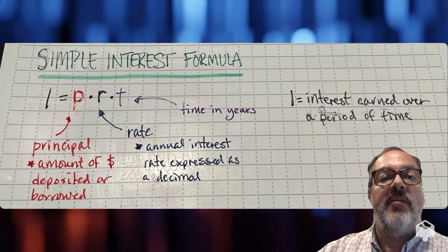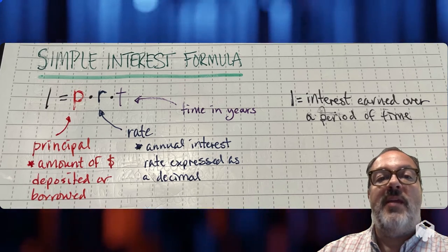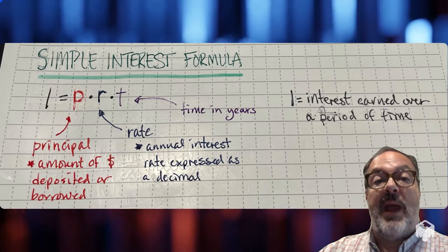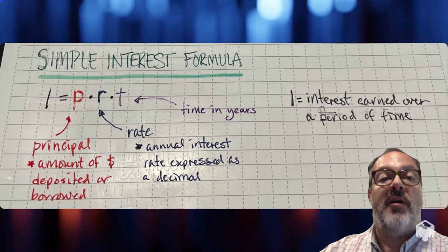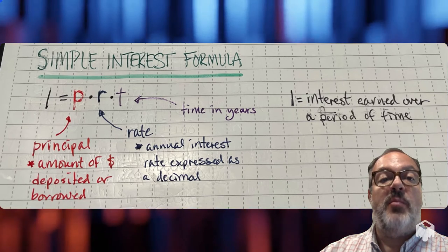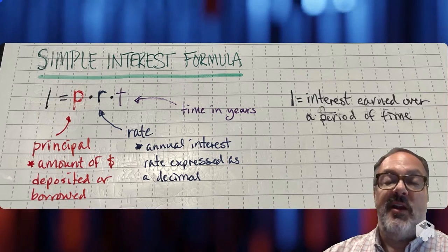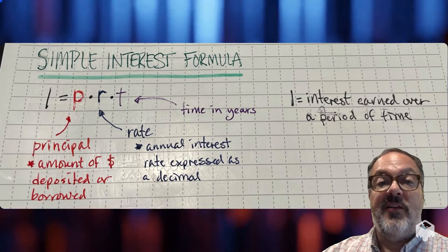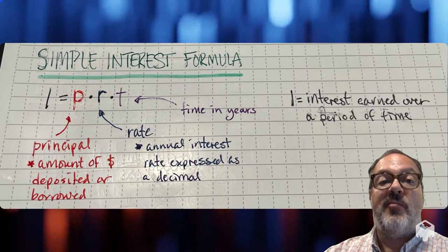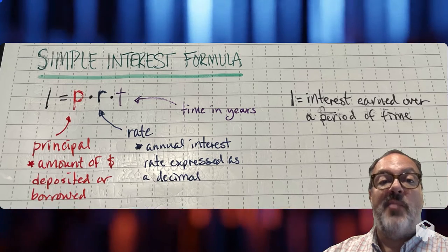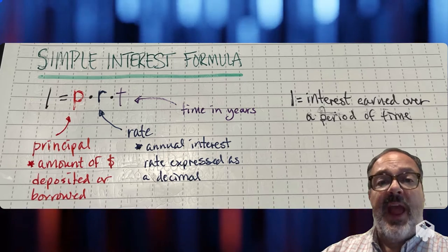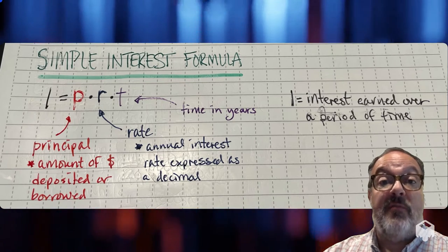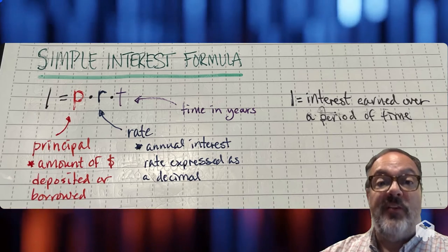My first piece is I, and that's going to be my interest earned over a period of time. It could also be the interest that I pay back to a bank or to a credit card. That's going to equal the product of P, R, and T. P is the principal — the amount we're depositing into a bank account or borrowing as a loan. R is our rate, and it has to be expressed as a decimal. And T is time in years — they have to be whole number years, and we'll see what happens when we have a problem involving less than a year or somewhere between two whole years.